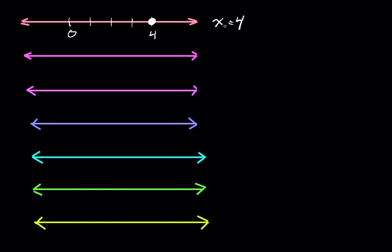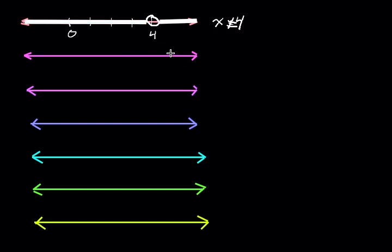The inequalities we're going to deal with are mostly greater than and less than. But what if the inequality said x is not equal to 4? In this case, we're not going to have a solid circle at 4 — we're going to have an open circle at 4. And then we're going to shade to the left and to the right, essentially shading all parts of the number line except the number 4.